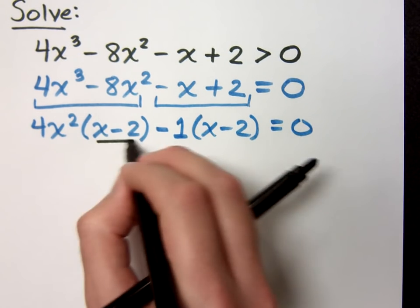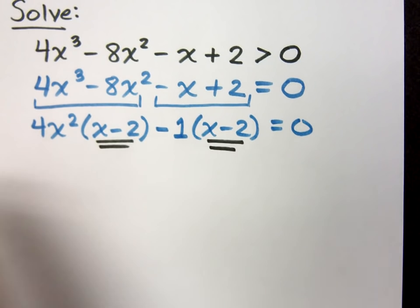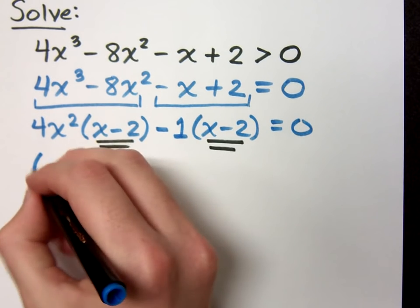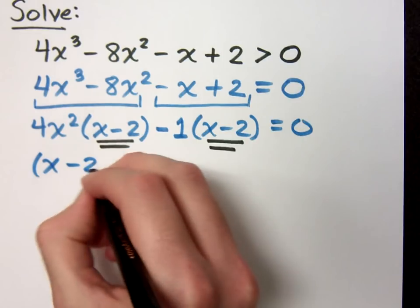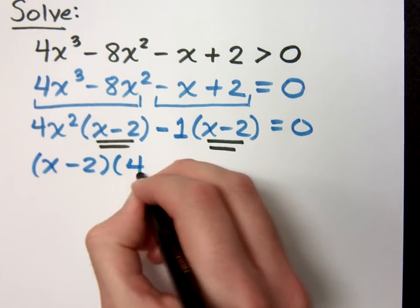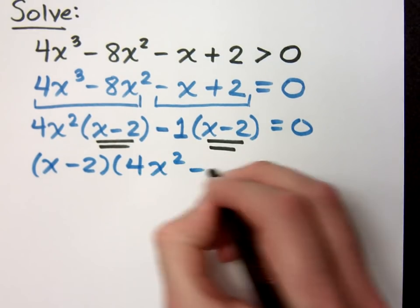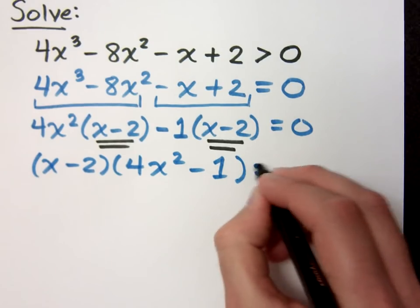Since these factors are the same, I can factor that out front. So x minus 2, and then I have 4x squared minus 1 is equal to zero.